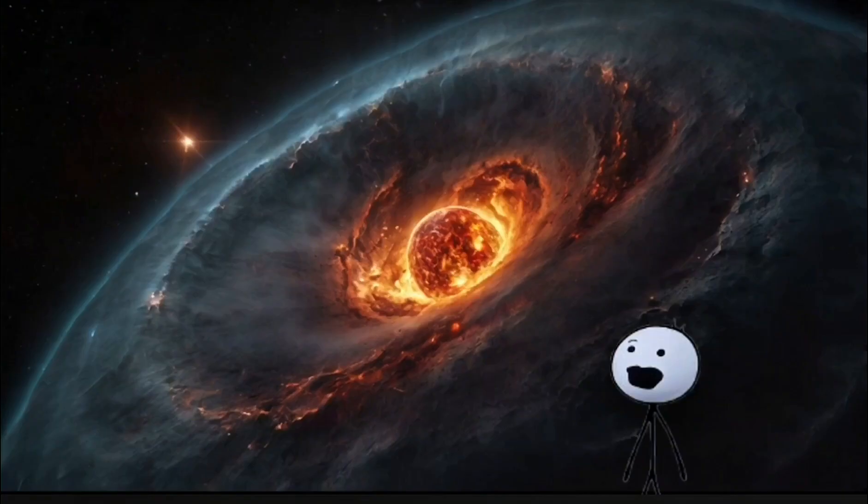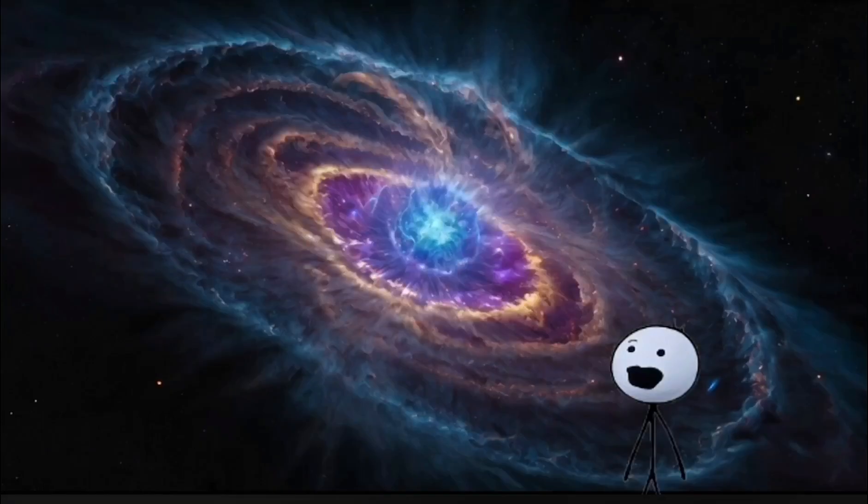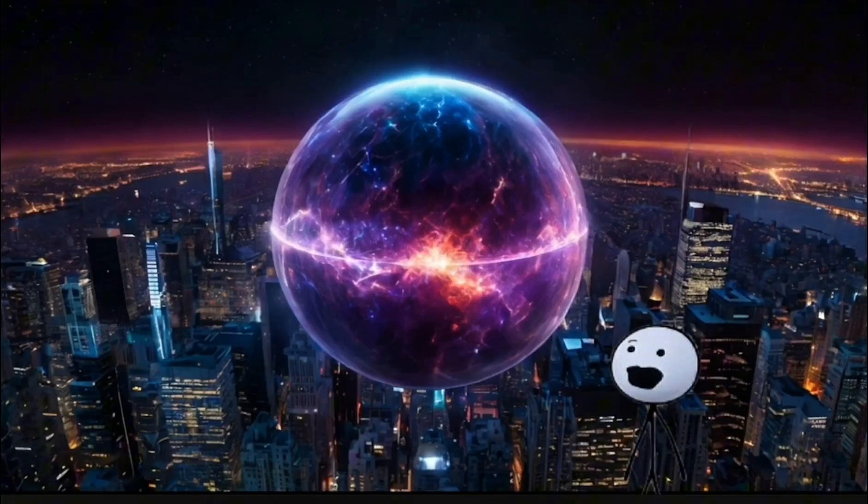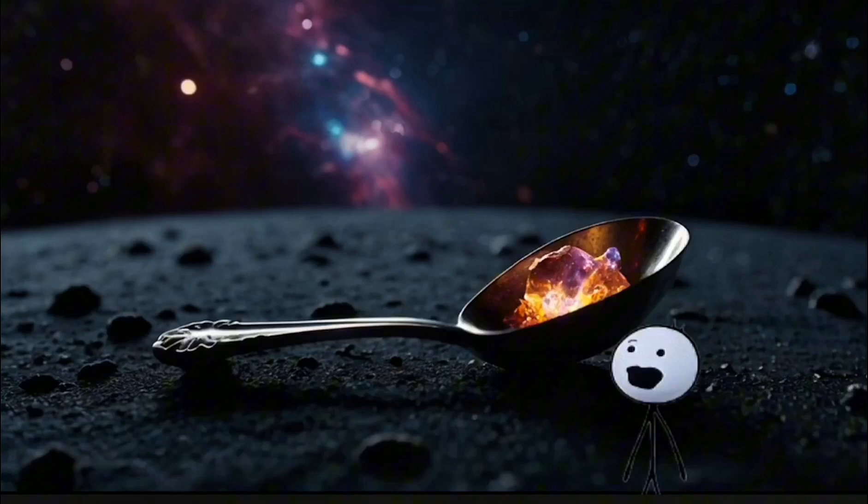Number 8: Neutron Stars. What happens when a star dies but doesn't quite become a black hole? You get a neutron star, one of the densest, most terrifying objects in the universe. Imagine cramming the entire mass of the sun into a city the size of Manhattan. One teaspoon of neutron star material would weigh a billion tons.